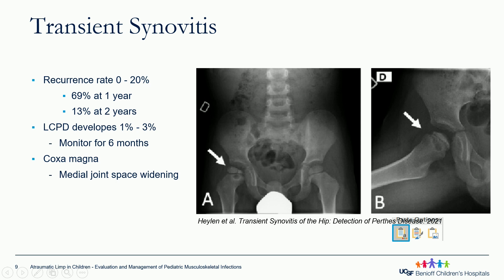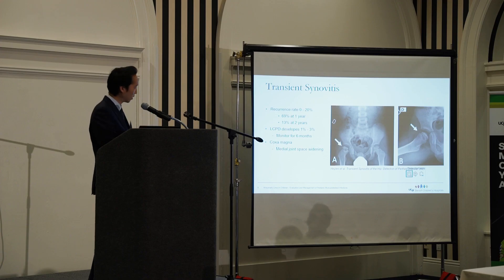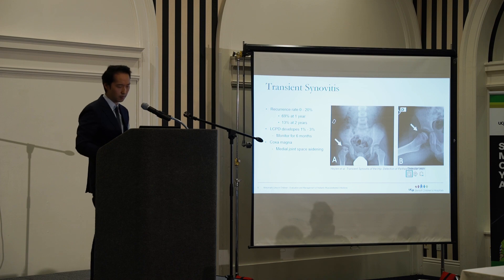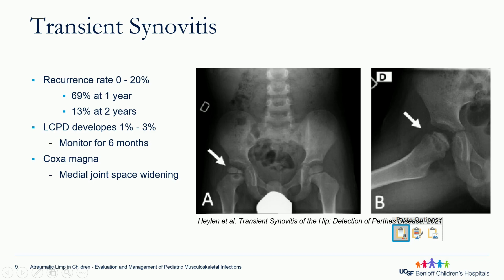The most common complication for transient synovitis is recurrence, and the rate has been reported as high as 20%. It's most common within the first year and can be as high as 70%. There's a rare association with Legg-Perthes disease, which is an idiopathic avascular necrosis of the femoral epiphysis, although more studies need to be done to delineate this. Some advocate monitoring patients who've had recent transient synovitis. Coxa magna has also been reported, most commonly with patients who initially present with medial joint space widening.